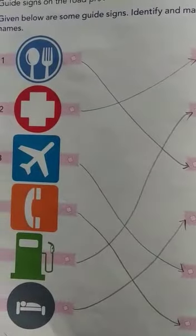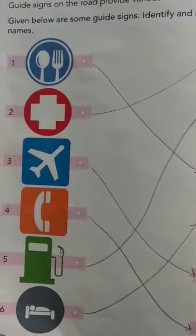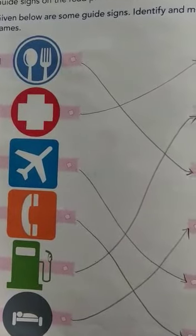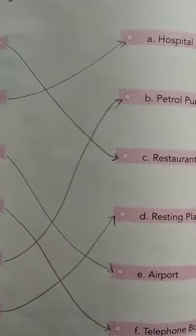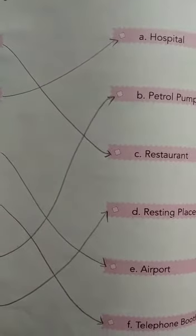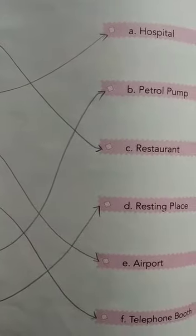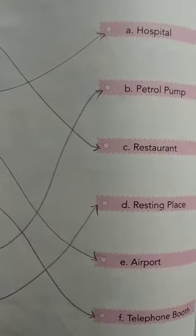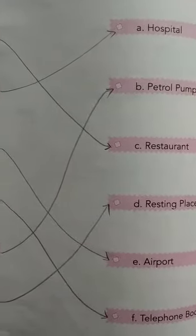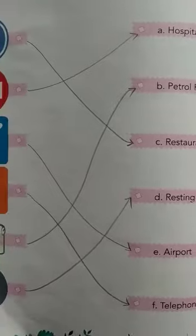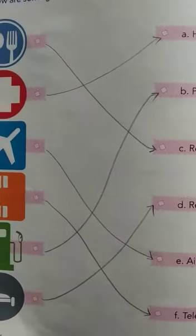The first one — there is a picture of a spoon and fork. Can you tell me which sign this is? Yes — Restaurant. So the first answer is Restaurant. Match the first picture with Restaurant.